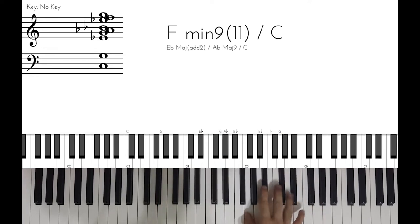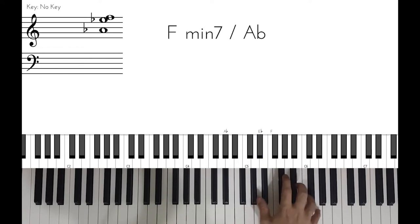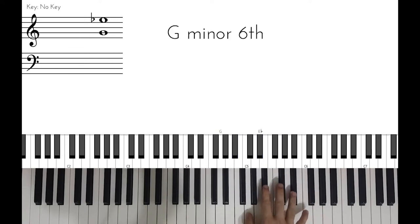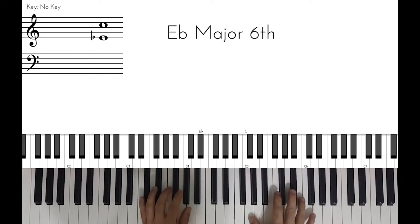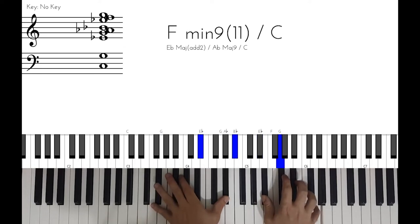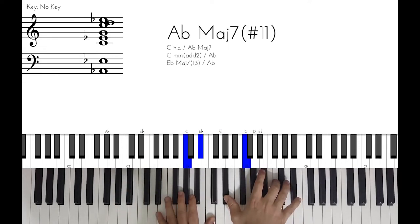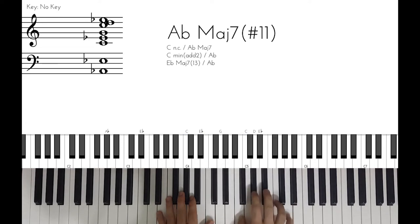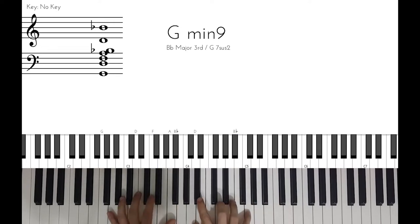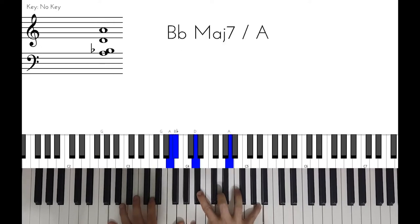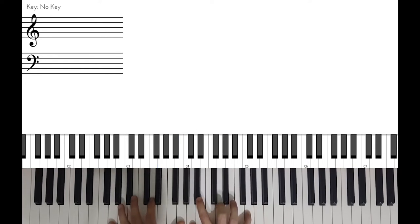It starts with D minor, then A flat major. So what did we do? I'm playing slowly. Let's take the A not from here, but from here—like this. G minor 9.